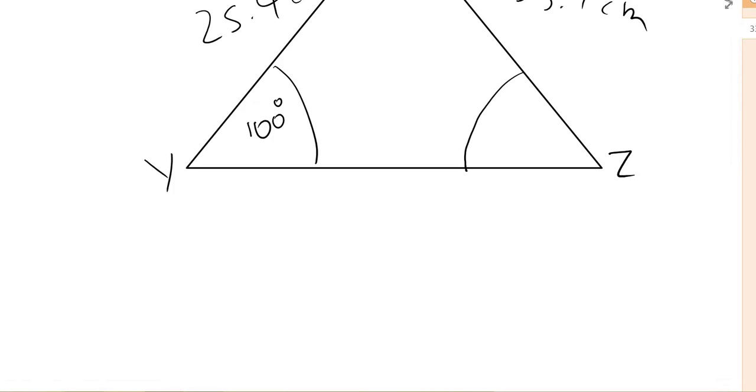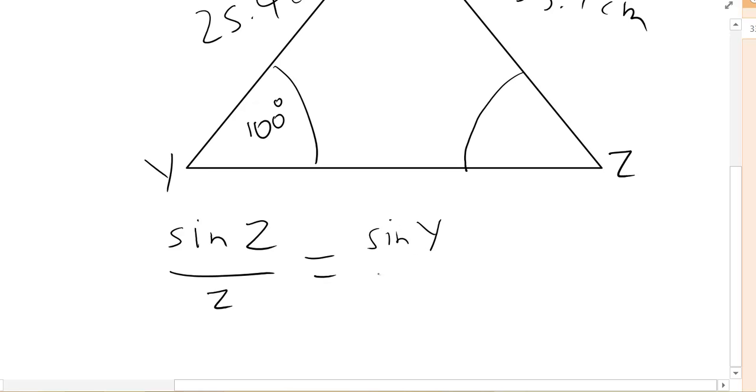Now the way we would do this is, because we're looking for an angle, we'd use the sine rule in this form: sin z over side z equals sin y over side y.